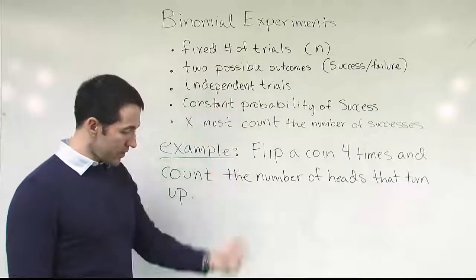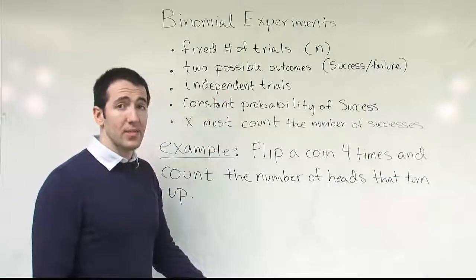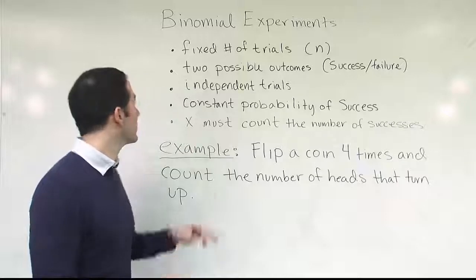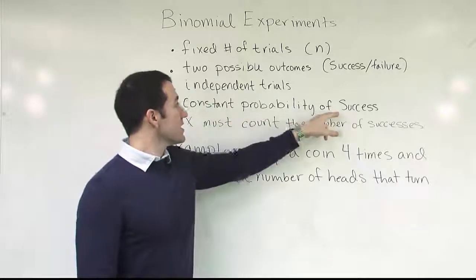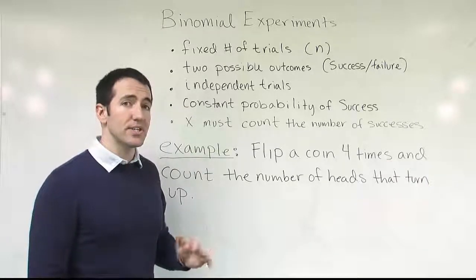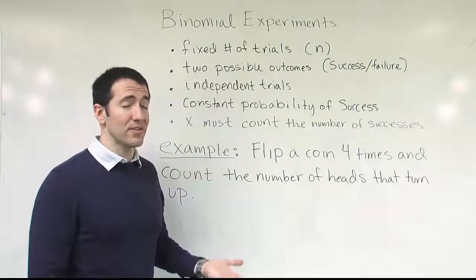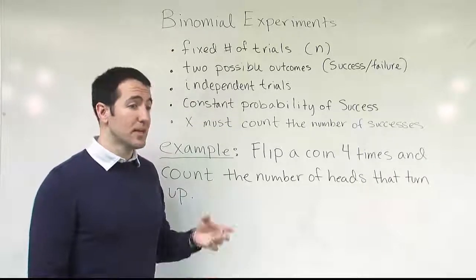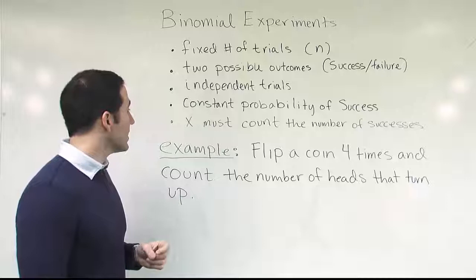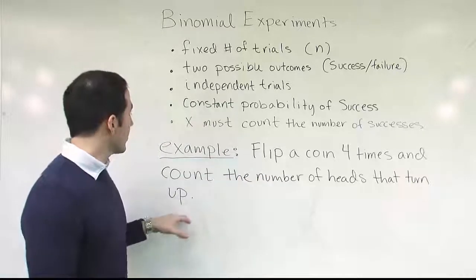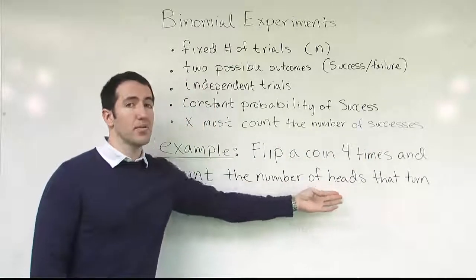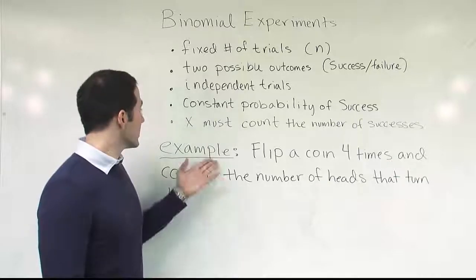For independent trials: if I flip a coin and it turns out heads, and I pick it back up and flip it again, is it more or less likely to be heads next time? The coin doesn't remember what just happened, so it's completely independent. For constant probability of success: whether the coin is fair or biased, that probability is constant. A fair coin is 50-50; even a biased coin that lands heads 90% of the time still has a constant 90% probability each flip. Finally, we're counting the number of heads that turn up, which counts the number of successes. This is clearly a binomial experiment.